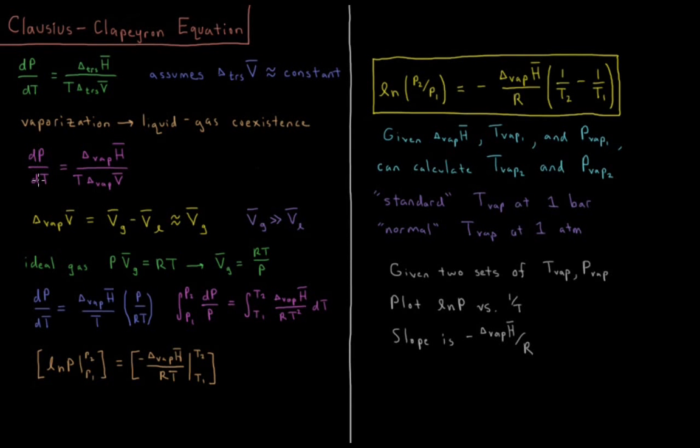So we see that dP/dT equals the molar enthalpy change of vaporization over the temperature times the molar volume change of transition.